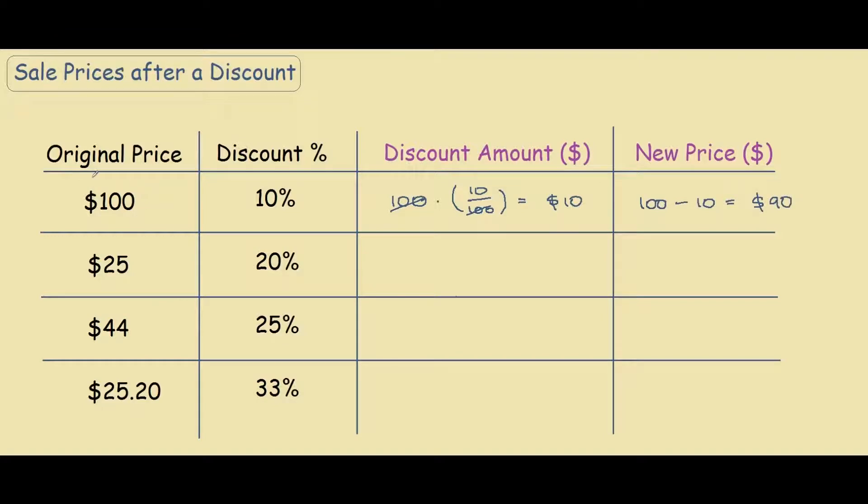So we can say if we have an object of $100 and we're given a 10% discount, our new price would be $90. Let's go through the next example, so we have $25 and we're given a 20% discount.